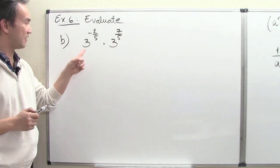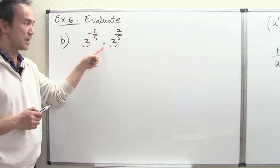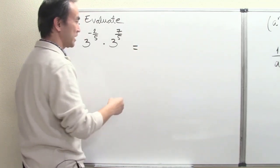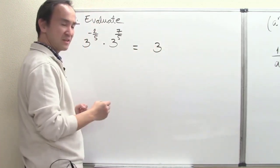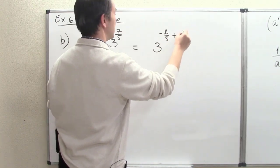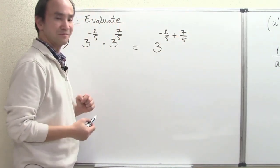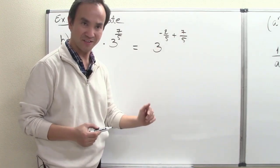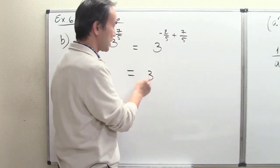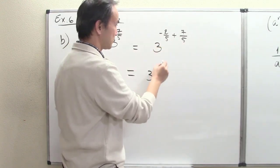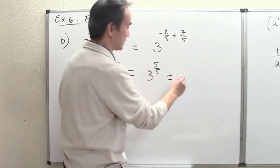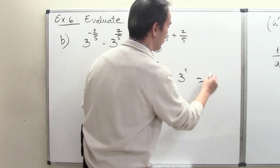Part B: evaluate 3 to the negative 2 fifths times 3 to the 7 fifths. Same base 3, so the two powers sum up: negative 2 fifths plus 7 fifths. The overall power is 5 over 5, and 5 over 5 is just 1. So the answer is 3 to the first power, which is simply 3.